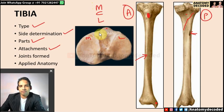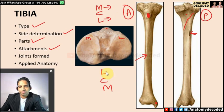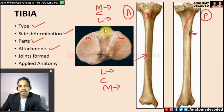Attachments in the intercondylar area can be remembered by the mnemonic 'Medical College Lucknow' (anterior) and 'Lucknow Medical College' (posterior). M = medial meniscus, C = cruciate ligament (anterior cruciate anteriorly, posterior cruciate posteriorly), L = lateral meniscus. So anteriorly: anterior end of medial meniscus, anterior cruciate ligament, anterior end of lateral meniscus. Posteriorly: posterior end of lateral meniscus, posterior end of medial meniscus, posterior cruciate ligament.